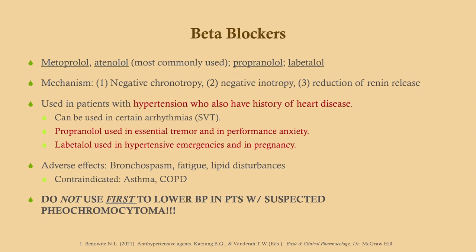Beta blockers are not routinely used for the management of hypertension. They're used for patients with hypertension with certain comorbidities, namely heart disease. So a patient who's post-MI — you would use a beta blocker. It can both increase cardiovascular survival and manage the hypertension. If you have an ordinary patient with no comorbidities, you're usually going to go with a thiazide or maybe an ACE inhibitor, not a beta blocker. Beta blockers can also be used in certain arrhythmias like supraventricular tachycardia. Propranolol is often used in essential tremor and in performance anxiety.